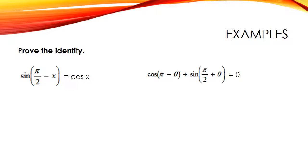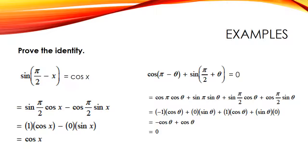Now we're going to work on proving the identity. We know the one on the left is true. You're going to use the formula for the sine of the difference of two angles to show that. We're going to do the same on the right using the difference and sum formulas. Pause the recording, give it a try, and resume to check your answer. For the one on the left, using the sine difference formula, the sine of π/2 is 1 and the cosine of π/2 is 0, so all we're left with is cosine. For the one on the right, using the cosine of the difference and then the sine of the sum: cosine of π is negative 1, sine of π is 0, sine of π/2 is 1, cosine of π/2 is 0. Things drop out, and we're left with negative cosine plus cosine, which equals 0.